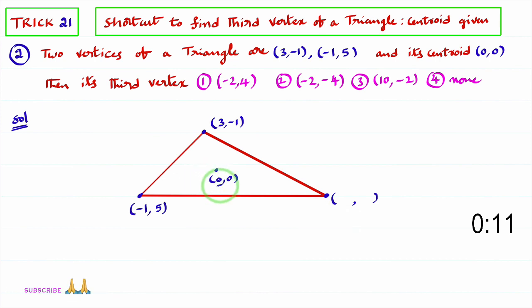What we do? First, x coordinate of centroid, you multiply with 3. 3 into 0, that is 0 minus sum of these two x coordinates. 3 plus minus 1 is 2. That is 0 minus 2. 0 minus 2 is minus 2.